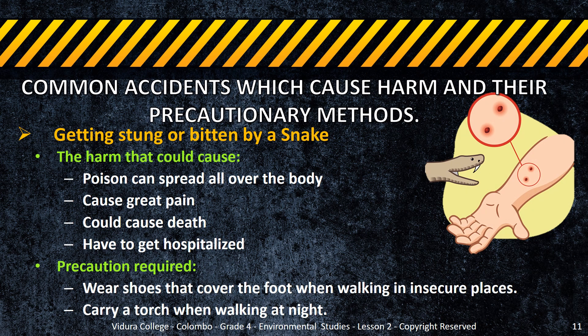Finally, we are going to learn some common accidents which cause harm and their precautionary methods — the things we can do to prevent them. Getting stung or bitten by a snake: the poison can spread all over the body, causing great pain, and if it spreads further, it could cause death. Therefore, you must get hospitalized for treatment. You should wear shoes that cover the foot when walking in insecure places and carry a torch when walking at night.